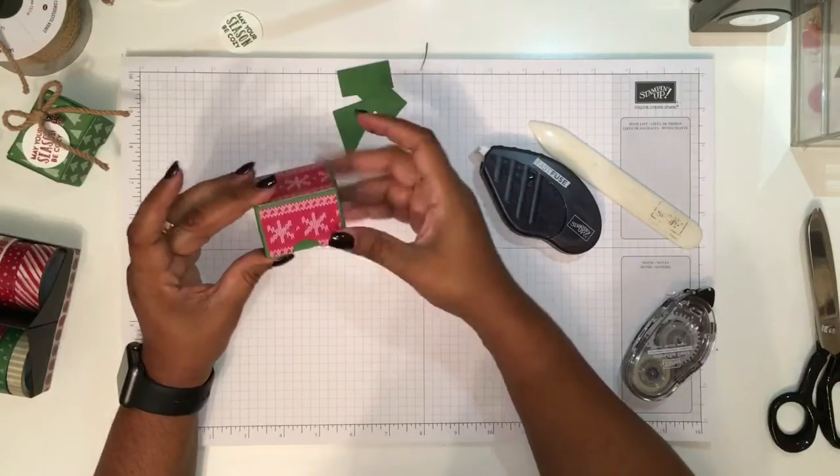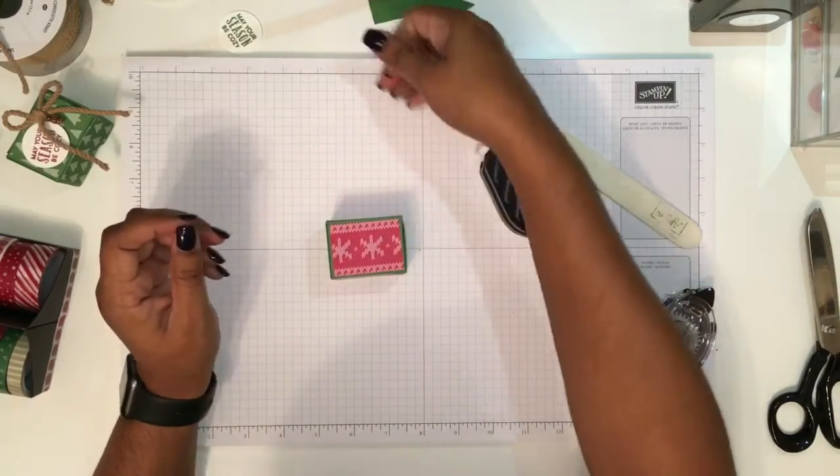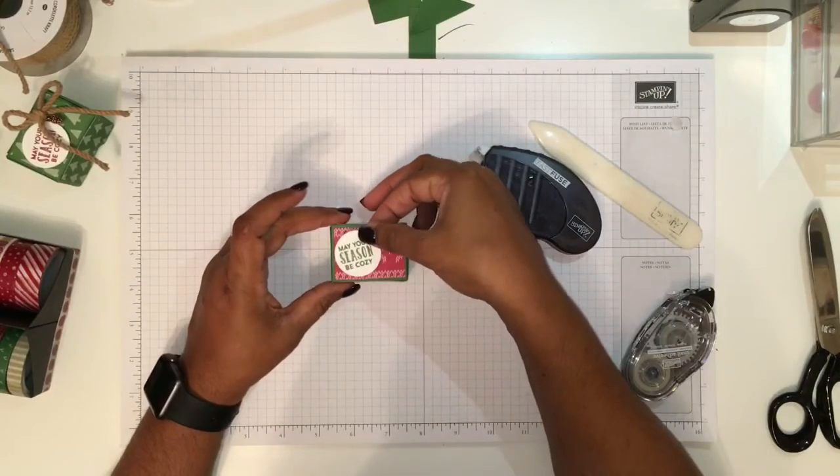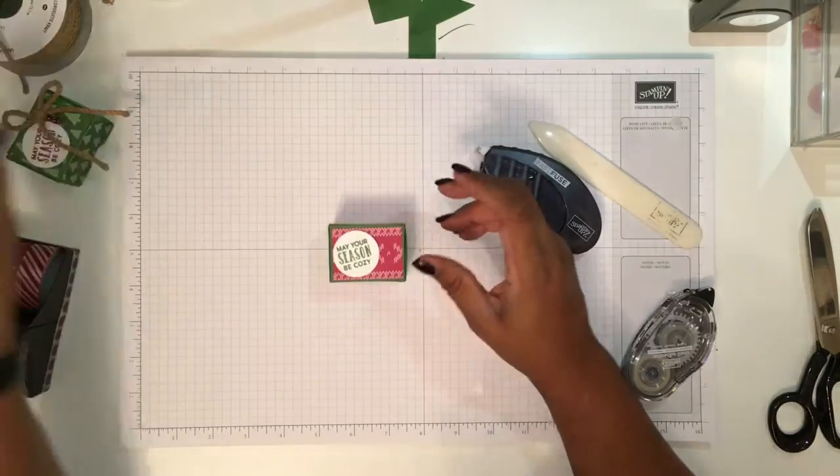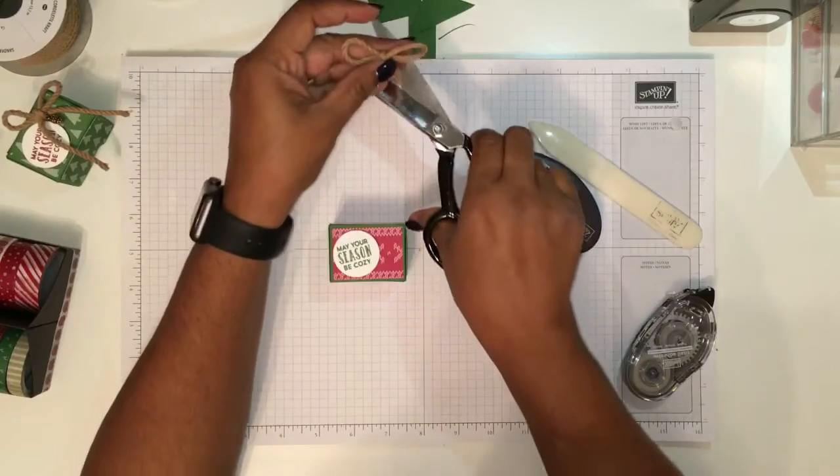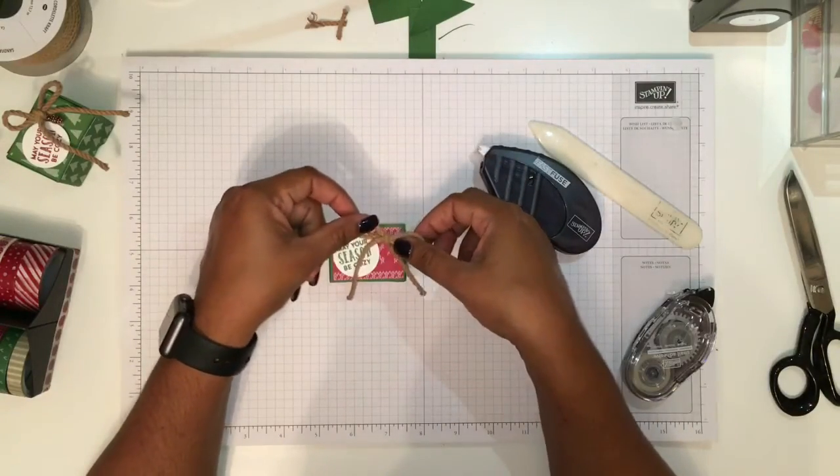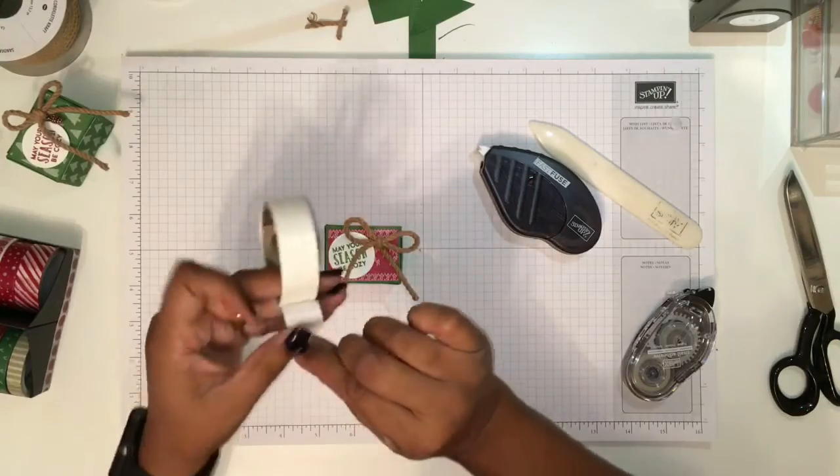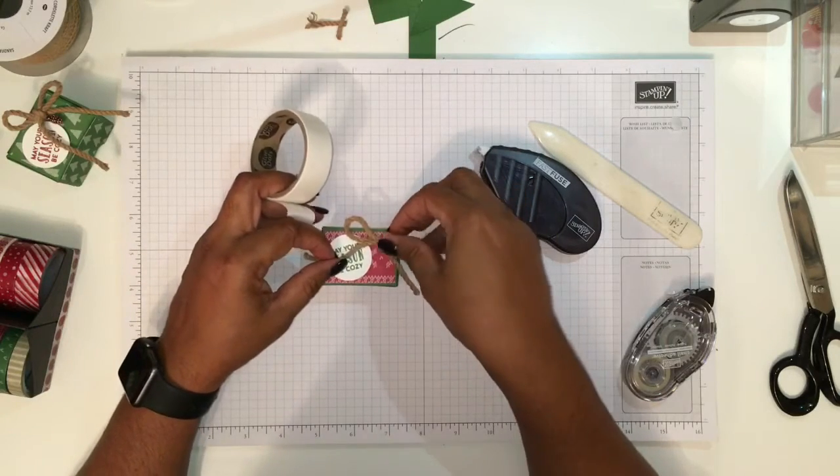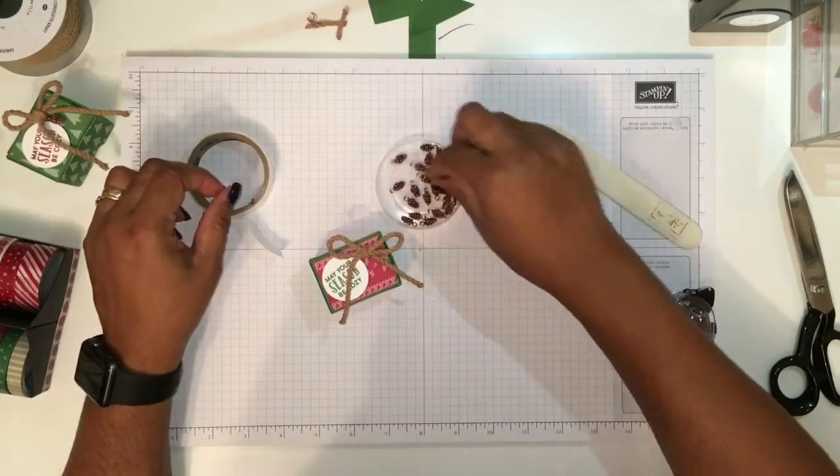Here we are - the little box is done. The only thing left is to get the decoration in place. We already did the stamping, so we're just going to put this here. 'May your season be cozy.' I love this paper. This is the ribbon that we need. I am going to use glue dots to get it down - it's such a strong glue.